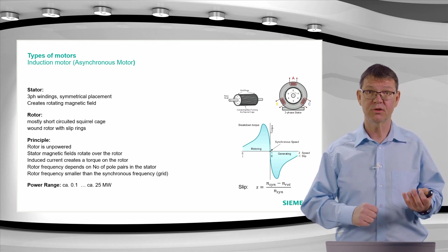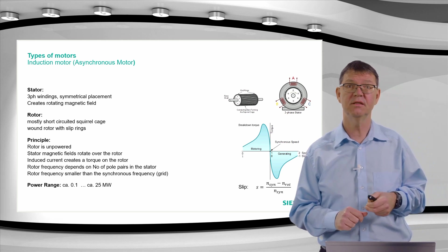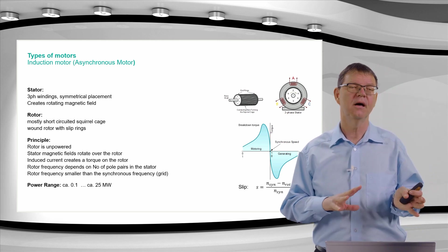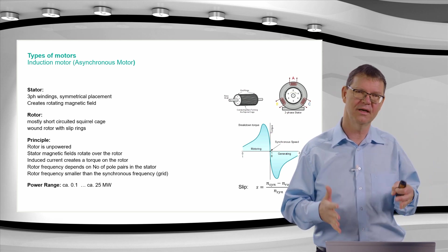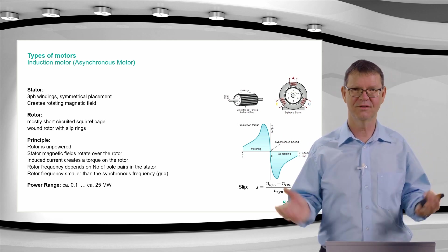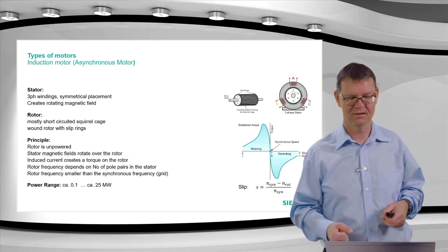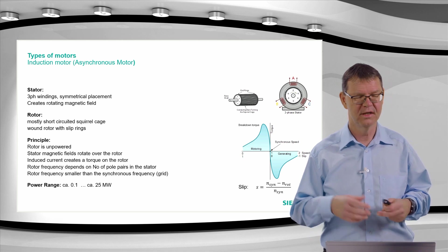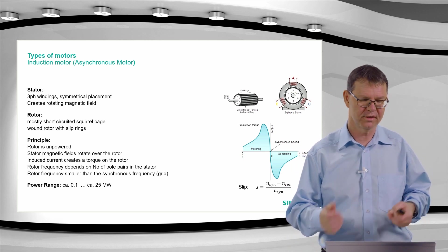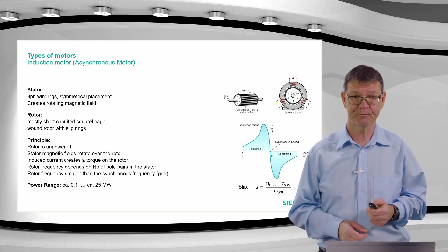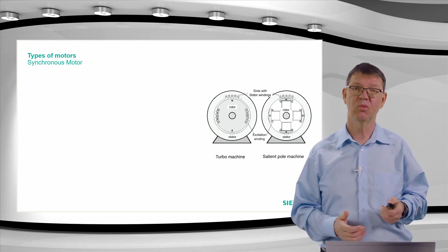The power range of an asynchronous motor is roughly as indicated here — it is more a guideline than a strict border. The majority will be lower than 25 MW normally. As a difference, we have synchronous motors.